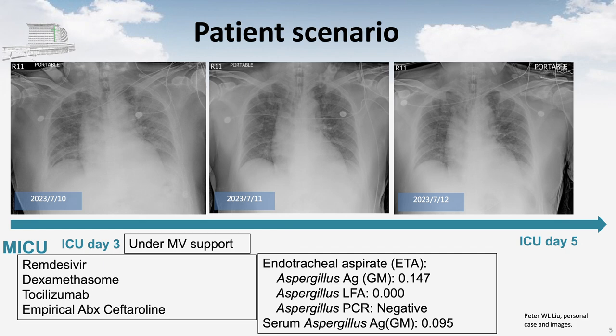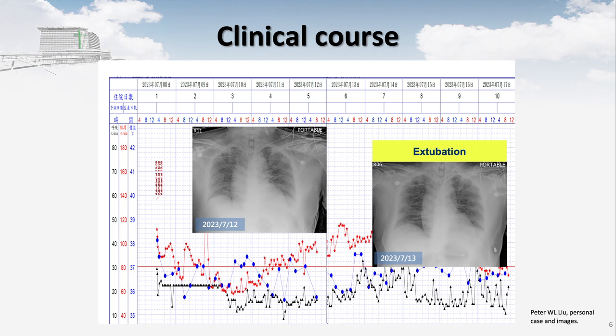The initial chest X-ray showed bilateral lung infiltrate — typical COVID pneumonia. He was admitted to the ICU due to the possibility of ARDS. We gave the standard of care for COVID infection: remdesivir, dexamethasone, tocilizumab, and empirical antibiotics. We performed Aspergillus screening on all intubated ICU patients using endotracheal aspirate for Aspergillus galactomannan and lateral-flow PCR — all were negative.